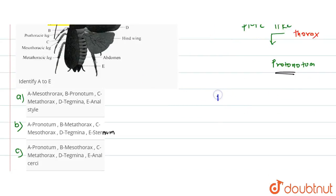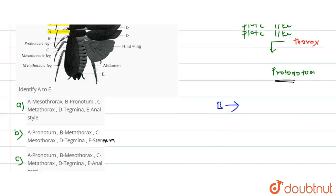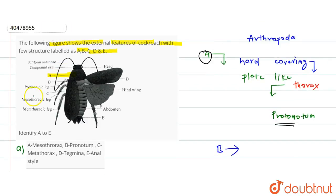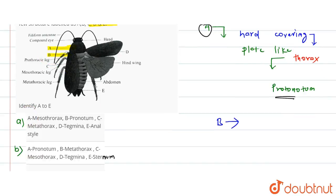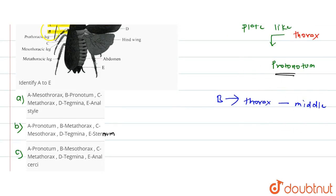If we check B, this part is part of thorax. This is the middle part of thorax. This is the mesothorax part of the cockroach.